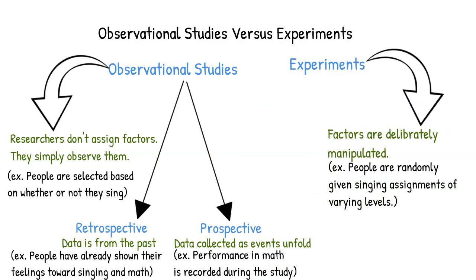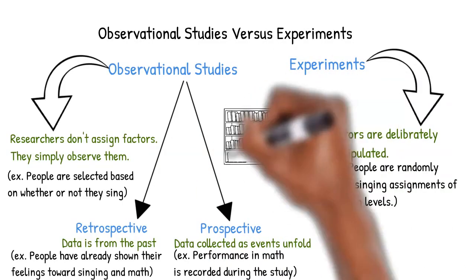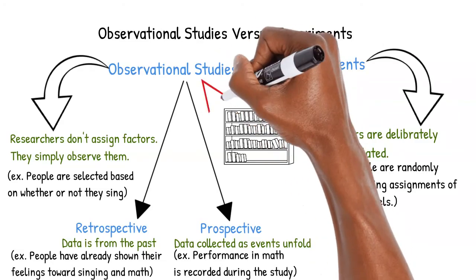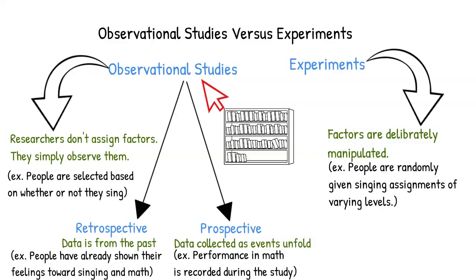Let's try one more. If we wanted to know whether hours spent in the library had an effect on GPA, we could select participants with a similar profile and assign specific library use. Perhaps some students are not allowed to go to the library at all, and others are told to study for a specific number of hours in the library per week. This is an experiment since we are manipulating library use. If instead we collected a log of library use, this would be an observational study.